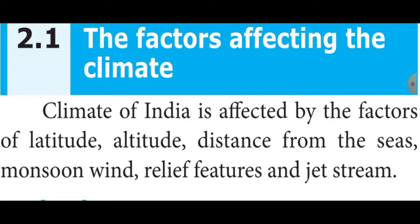The fourth factor is monsoon wind, which is the most dominant factor affecting the climate of India. The onset of the southwest monsoon brings down the temperature of entire India and causes moderate to heavy rainfall in many parts of the country. Similarly, the climate of southeast India is also influenced by the northeast monsoon.